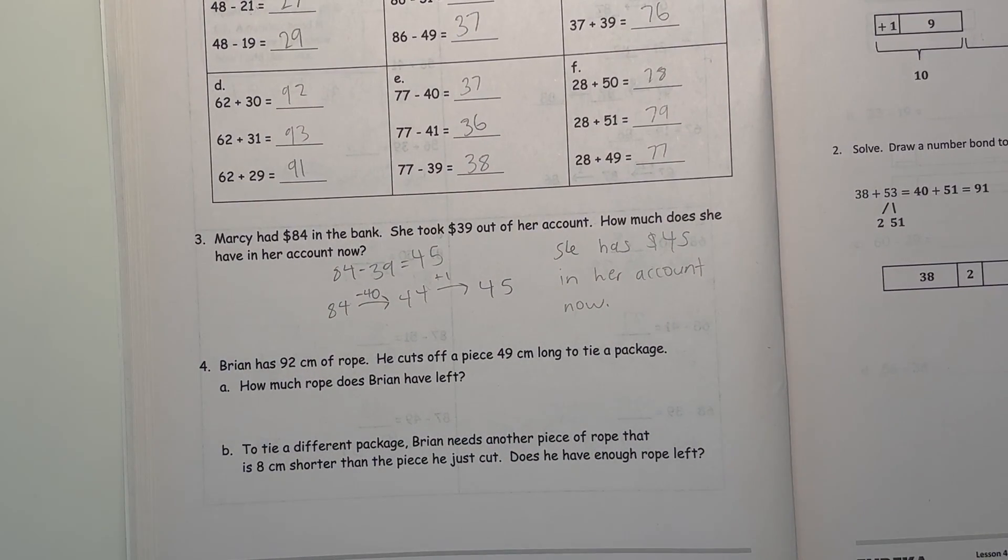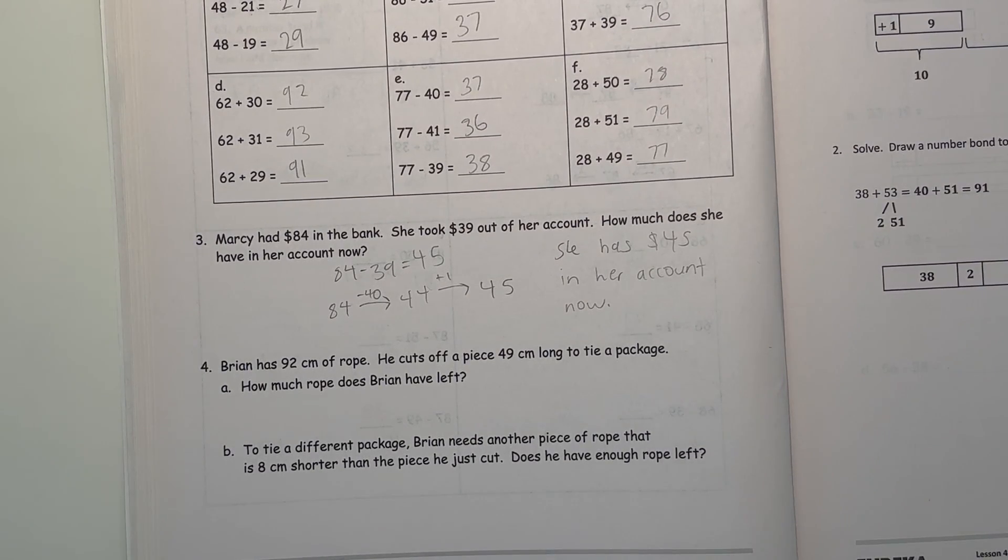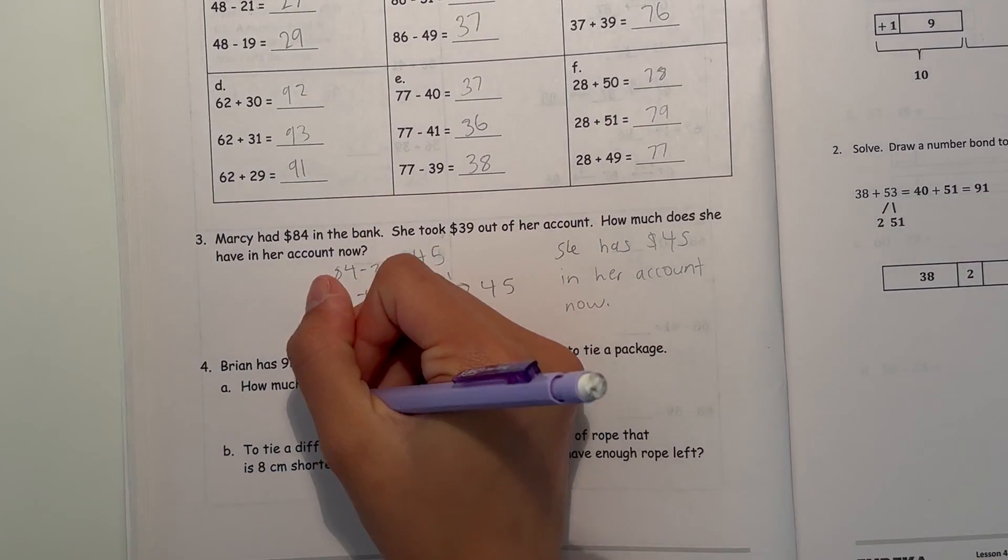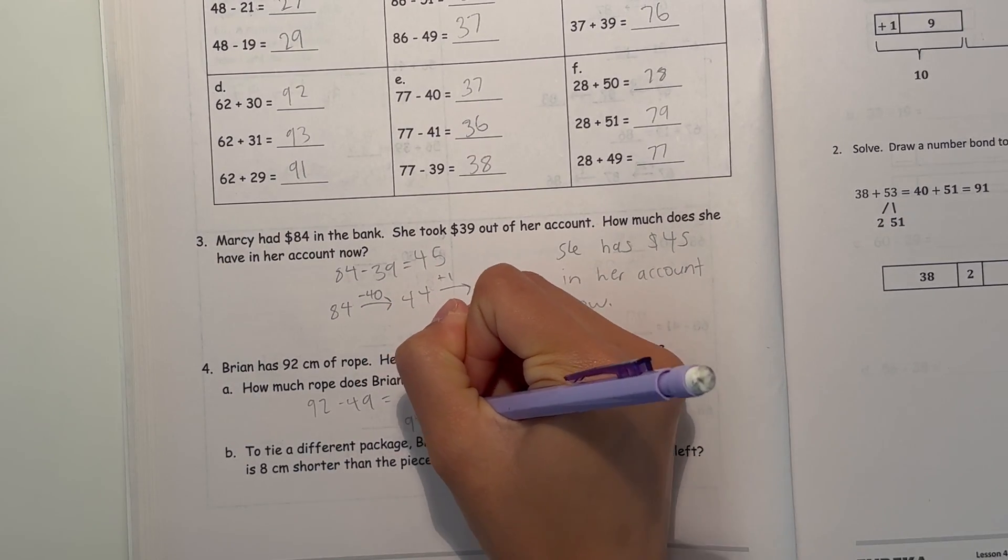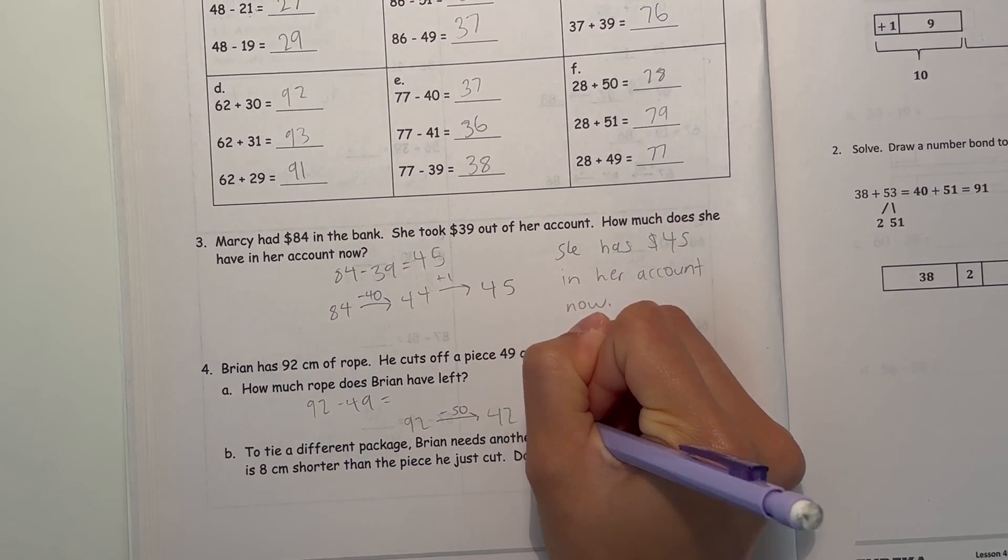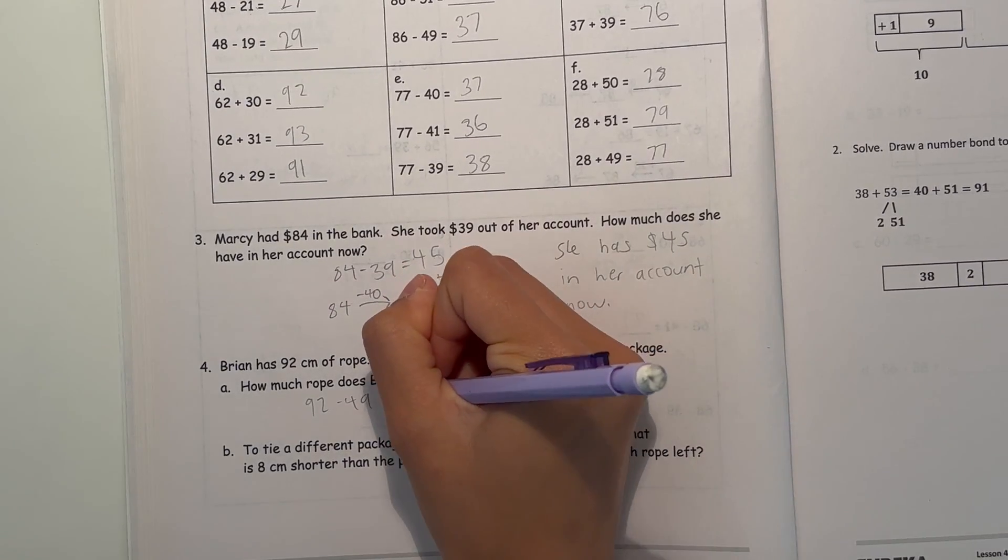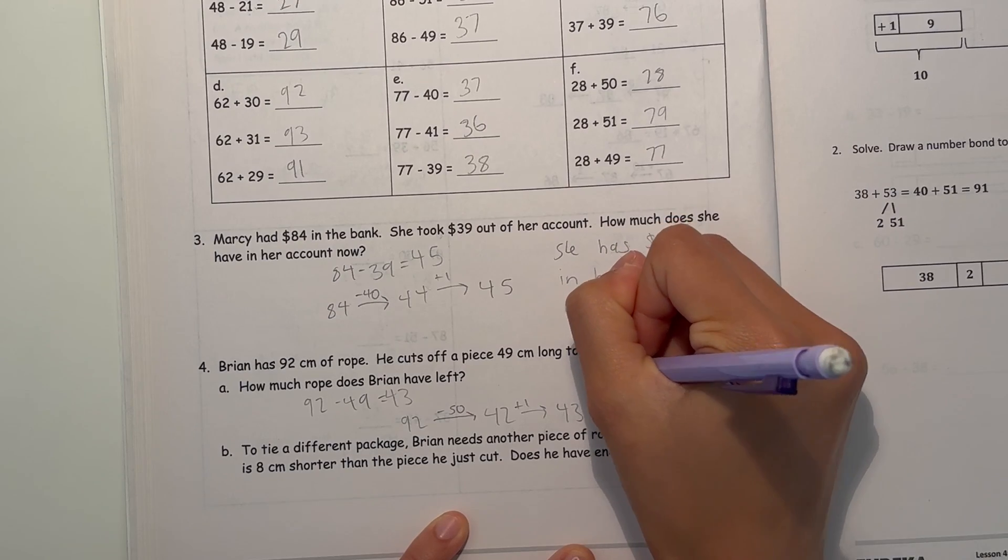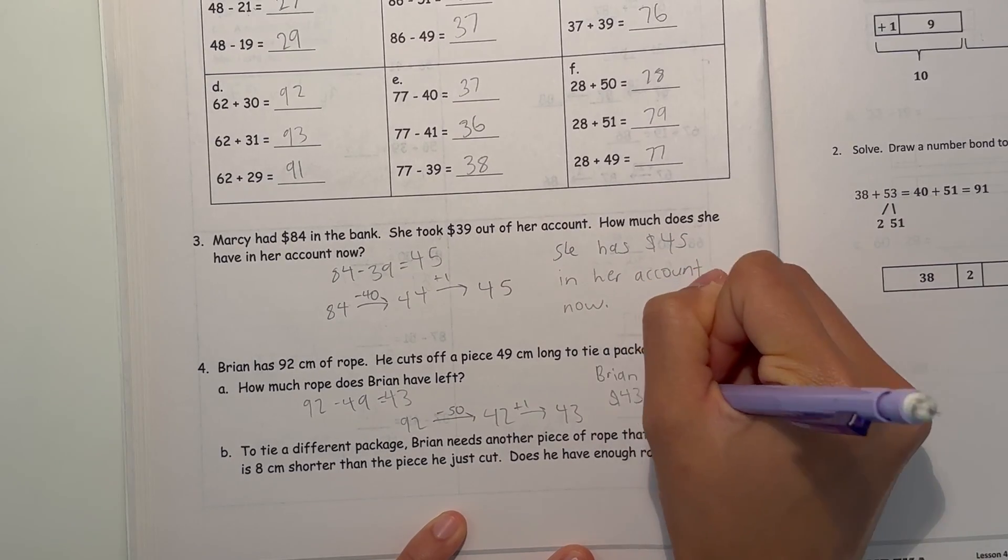Number 4. Brian has 92 centimeters of rope. He cuts off a piece 49 centimeters long to tie a package. How much rope does Brian have left? So if he had 92 and he cut 49, then how much does he have left? I'm going to subtract 50 first, which is 42, and then add back that extra that we took away, it's 43. So that means Brian has 43 centimeters left.